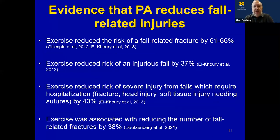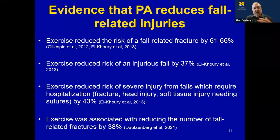Similarly, systematic reviews by Gillespie and Elkuri showed that exercise reduced the risk of fall-related fractures by 61% to 66%, reduced the rate of injurious falls by 37%, reduced severe injury from falls requiring hospitalization by 43%, and reduced the number of fall-related fractures by 38%. There is clear evidence of benefit from engaging in multi-component physical activity to reduce fall-related injuries.